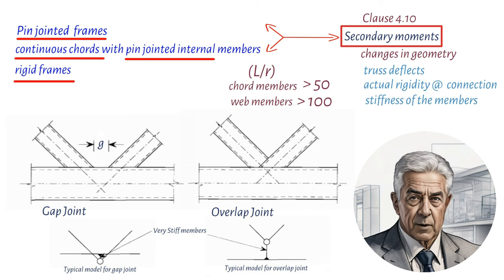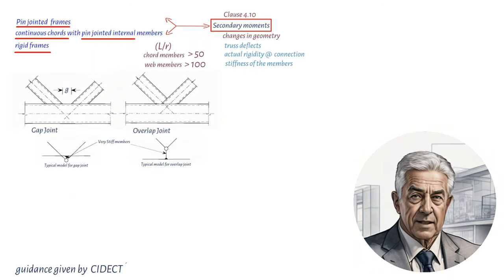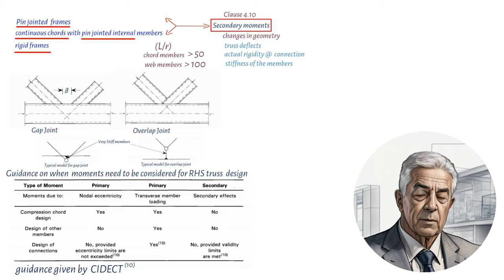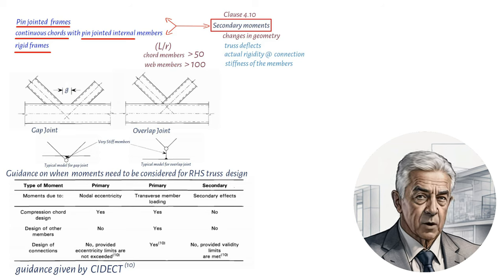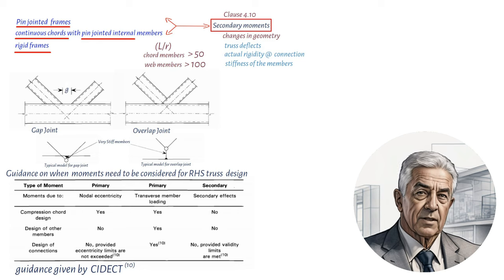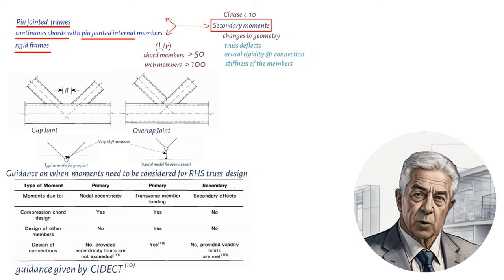To calculate member forces and moments, certain types of connection have been well researched, and guidance exists that defines when the moment due to eccentricity at nodes may be ignored for connection design and design of some truss members. When modelling a truss, it's best to avoid connection details that involve complex cutting or extensive stiffening, as they significantly increase overall cost. Moreover, the use of an H-section for the bottom cord should only be adopted if internal members can be satisfactorily connected, because difficult access for welding, size of gusset plate, and load transfer through the web should be considered.